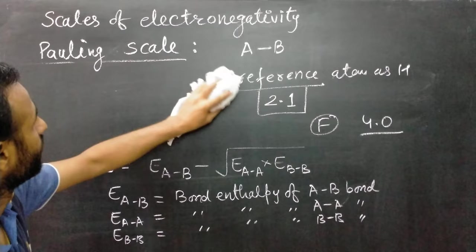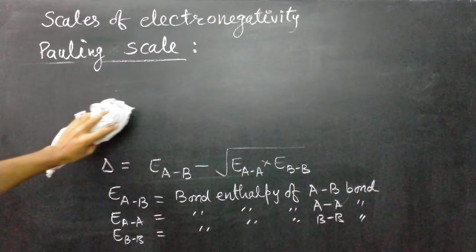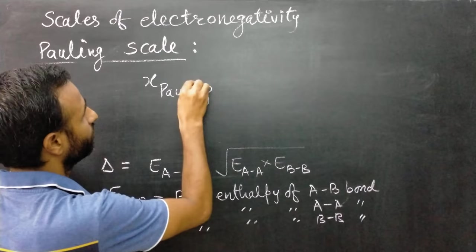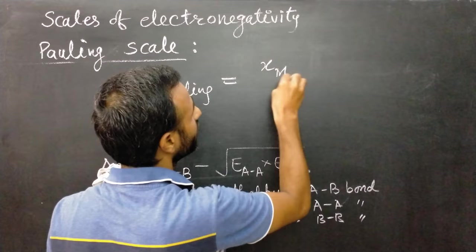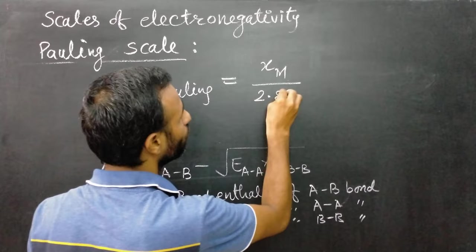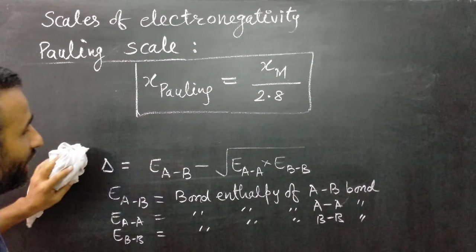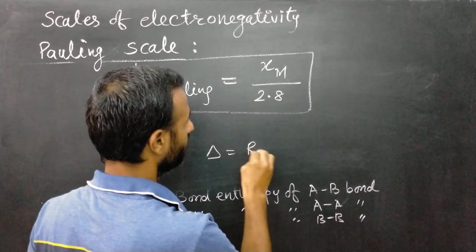The Pauling scale and Mulliken scale are related to each other. The electronegativity of any element on the Pauling scale is equal to the electronegativity of that element on the Mulliken scale divided by 2.8. Also, delta in the Pauling formula is called resonance energy.